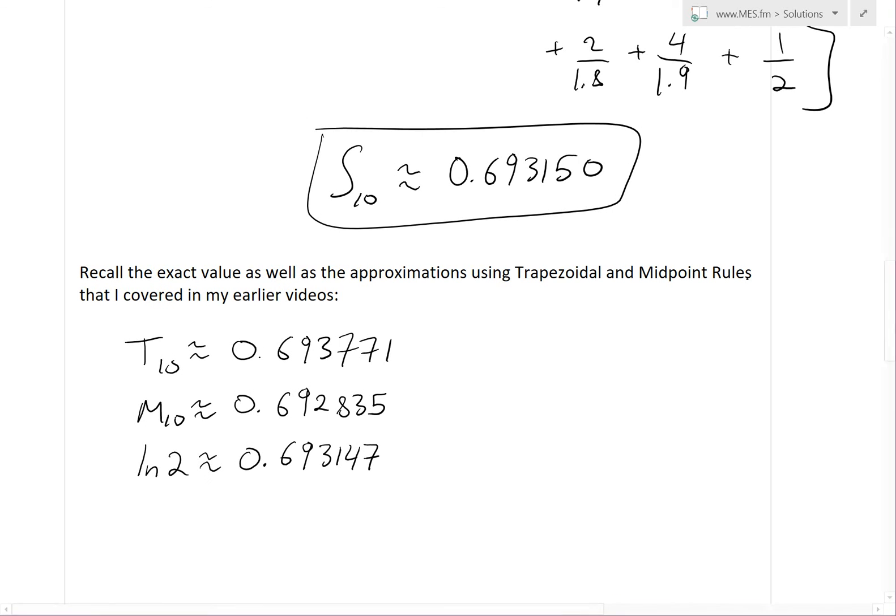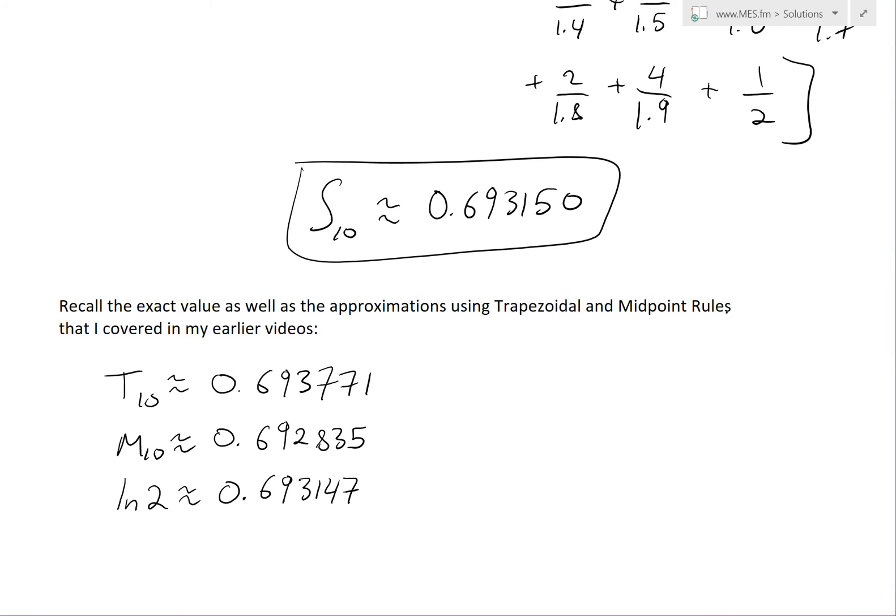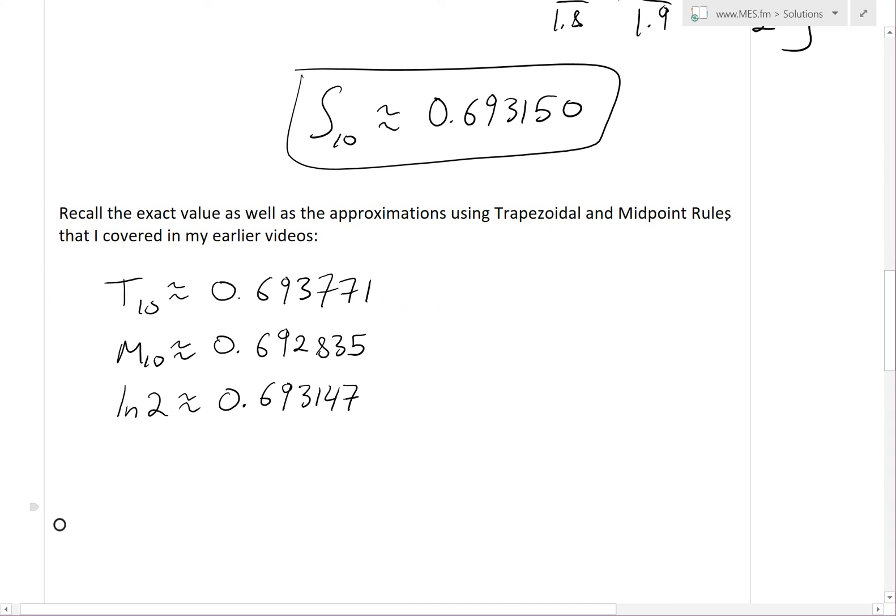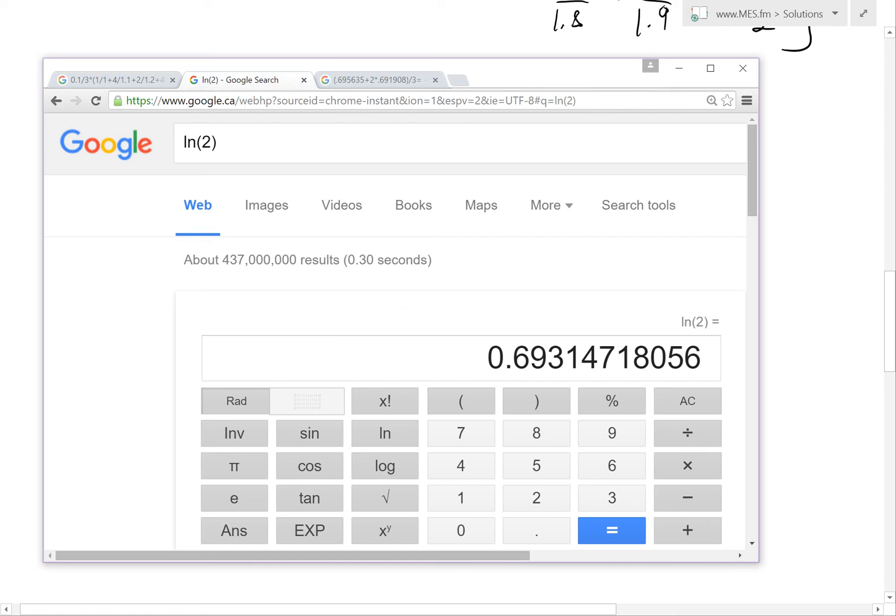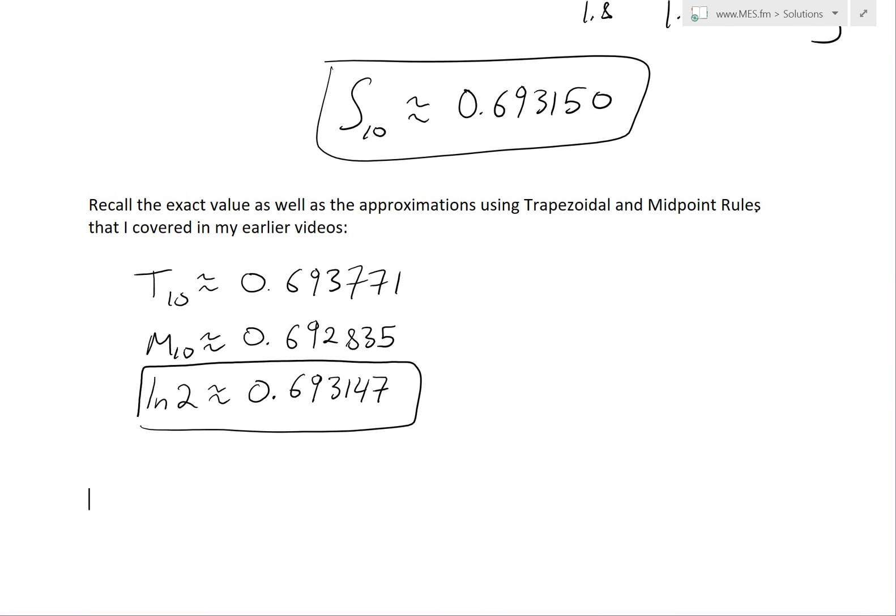Recall the exact value as well as approximations using trapezoidal and midpoint rules that I covered in my earlier videos. The exact value is ln 2, which if you plug into the calculator is about 0.693147. Also the trapezoidal rule and midpoint rule. When we compare all these, this has 0.693150, this is correct for the first four digits, then it's off at 0.47 as opposed to 0.50. Let's compare with the trapezoidal rule and midpoint rule. These are off by the last three digits.